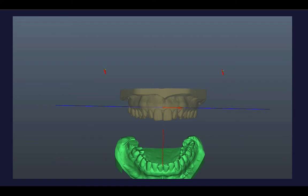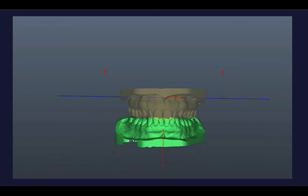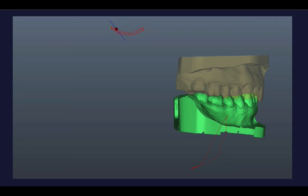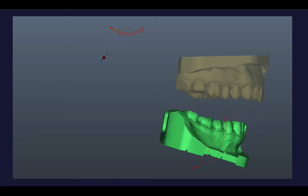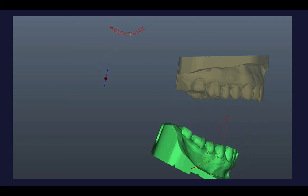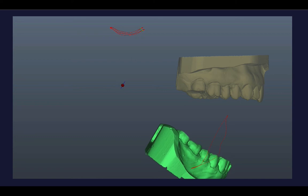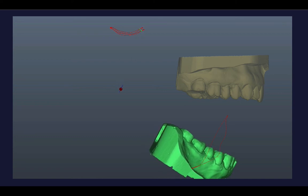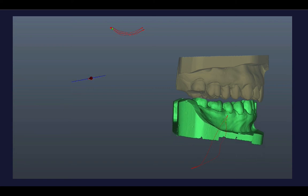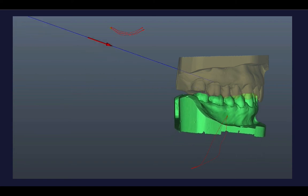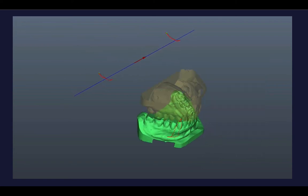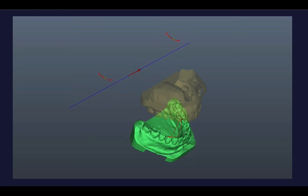I show you this here in the Axiocomp software of SAM. This feature will be available in a separate module where the scans of the patient are imported together with the AxioQuickRecorder data and we can visualize this together. And the blue line that you see is now this virtual axis.